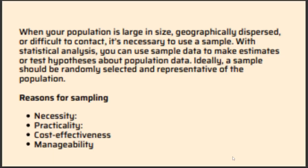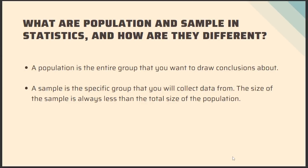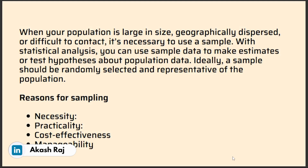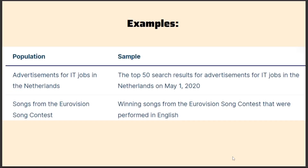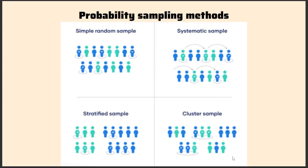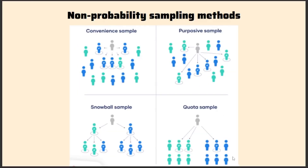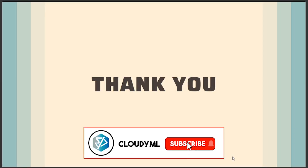So while explaining this question in the interview, you have to say what a population is, what a sample is, and what the difference between them is. Explain the necessity of sampling and also give some examples. You can also explain certain types of sampling methods so that the interviewer knows you understand the topic in detail. Thank you for watching this video — I hope you found it useful. Do like it, share it with your friends, and subscribe to our channel. Thank you.